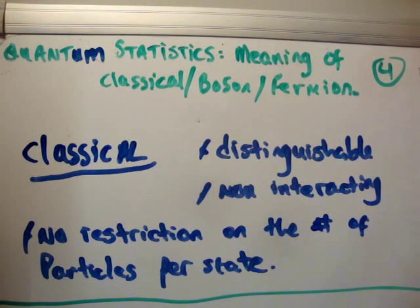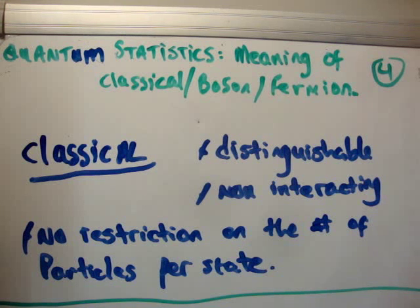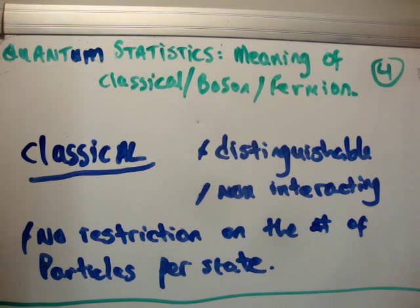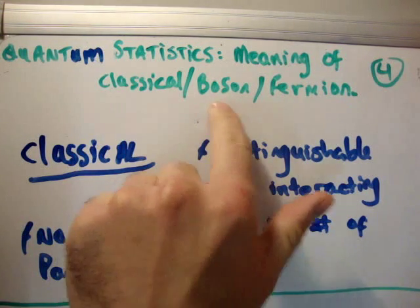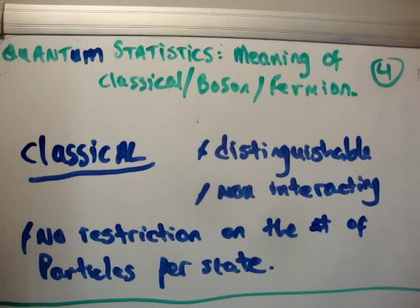In this video I'm going to continue on my lecture series on quantum statistics. In the previous video I discussed distinguishable particles, or what that means, to say they're identical, and what interacting and non-interacting mean. So now I'm going to move on to the meaning of classical particles, bosons, and fermions. This is tutorial video number four, basically applying the terminology I used in the previous video.